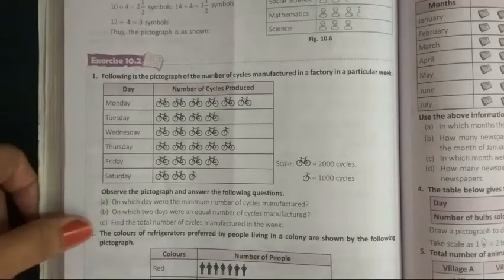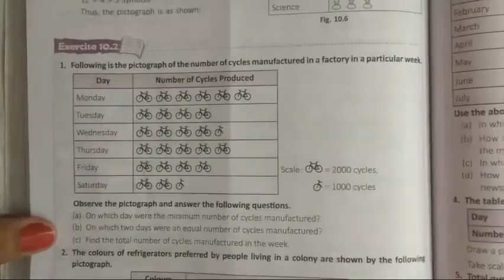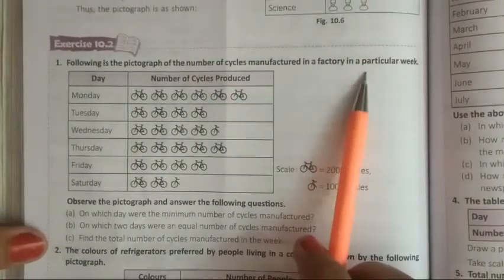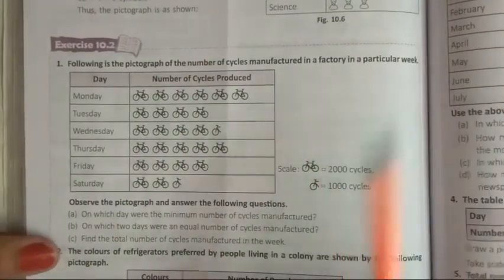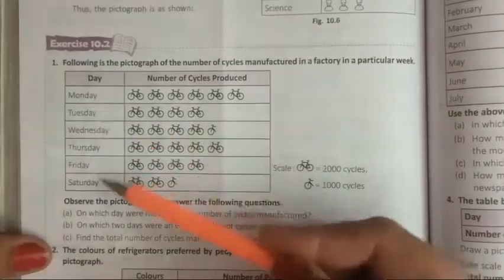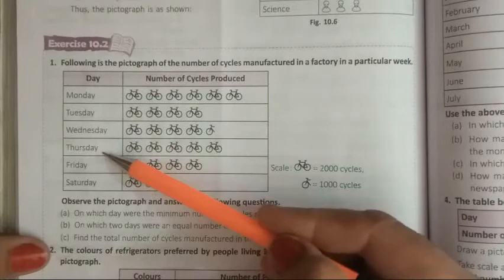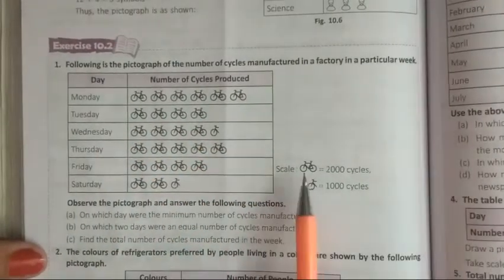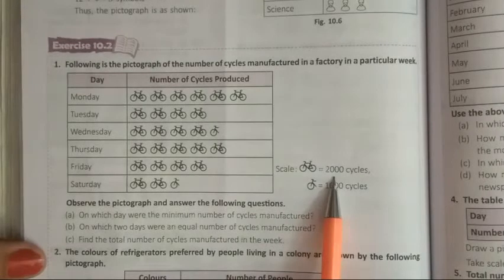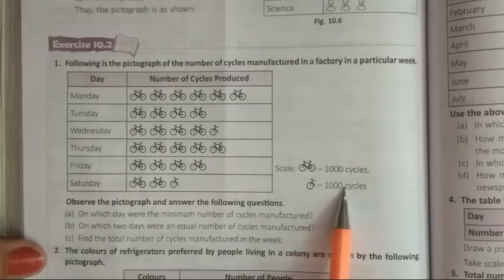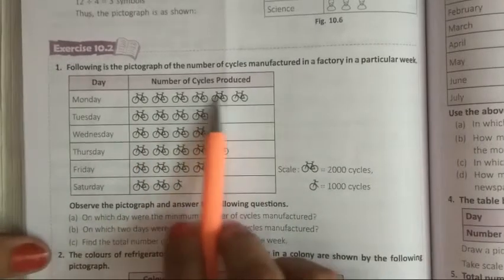Following is the pictograph of the number of cycle product manufactured in a factory in a particular week. Week me, humare seven days hote hai, to Monday, Tuesday, Wednesday, Thursday, Friday, Saturday tak ka, aap ko data diya gaya hai. Jo one cycle hai, woh represent kar rhi hai, 2000 cycles ko. Or jo half cycle hai, woh thousand cycle ko represent kar rhi hai.